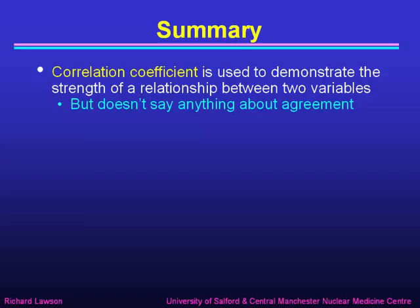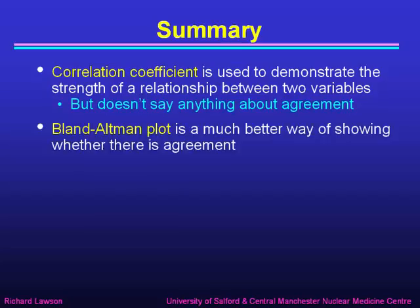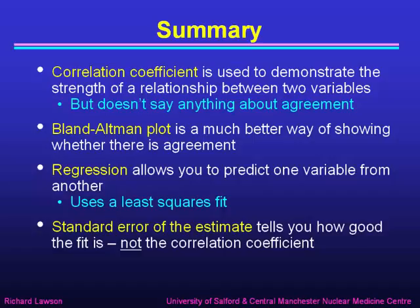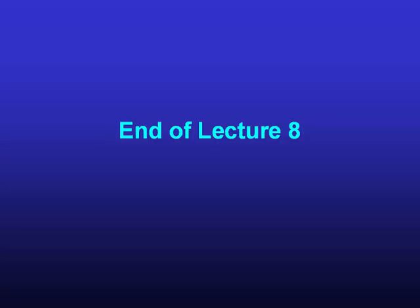In summary, we've talked about the correlation coefficient being used to demonstrate the strength of a relationship between two variables, but it doesn't say anything about agreement. We then talked about the Bland-Altman plot as a much better way of showing whether there's agreement between two measurements of the same thing. We've just looked at regression, which allows you to predict one variable from another using a least squares fit. I've finished by explaining that the standard error of the estimate tells you how good the fit is — not the correlation coefficient. Don't use the correlation coefficient as a measure of goodness of fit. That's the end of my lecture on statistics.